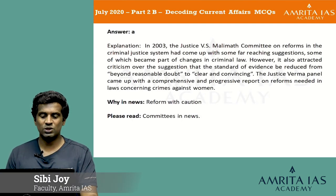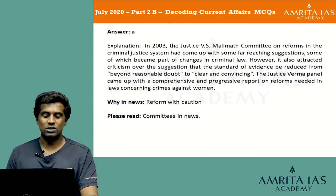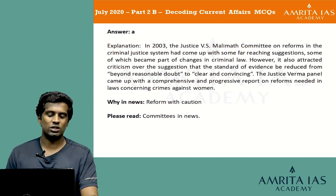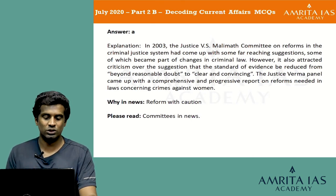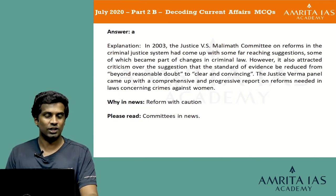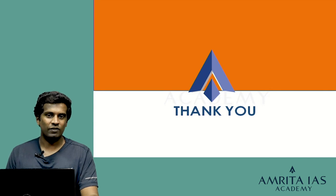In 2003, the Justice V.S. Mallymath Committee on Reforms in the Criminal Justice System came up with far-reaching suggestions, some of which became part of changes in criminal law. However, it also attracted criticism over the suggestion that the standard of evidence be reduced from 'beyond reasonable doubt' to 'clear and convincing.' The Justice Verma Panel came up with a comprehensive and progressive report on reforms needed in laws concerning crimes against women. With this, we are completing part 2B of this video. This is C.B. Joy signing off. Have a nice day, thank you.